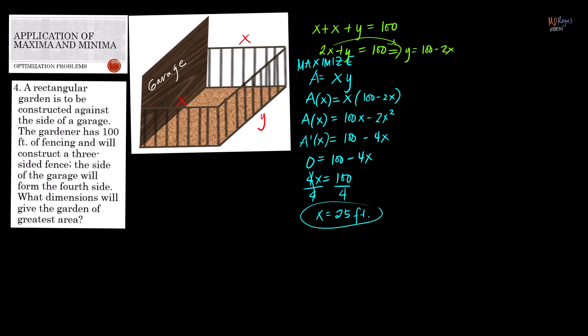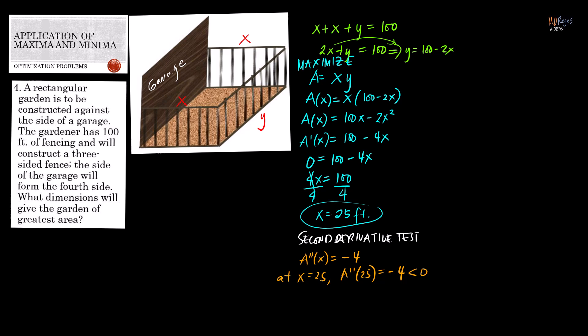We need to confirm that x = 25 yields a maximum value. Using the second derivative test, A″(x) = −4. Since it's a constant, for any value of x — including x = 25 — A″(x) = −4, which is less than zero. Therefore, x = 25 will yield a maximum value for A(x), meaning a width of 25 feet maximizes the garden area.